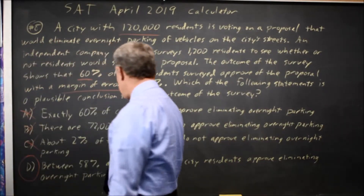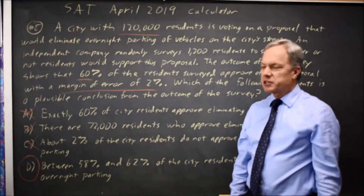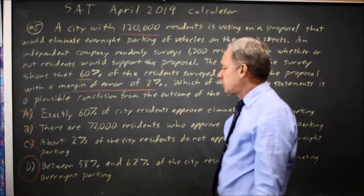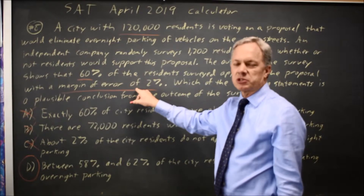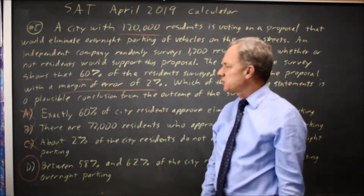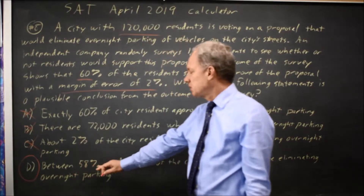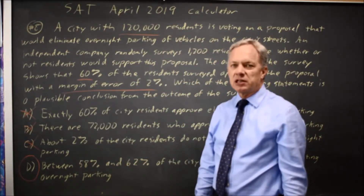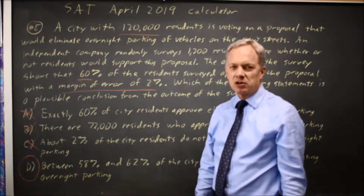Hoping that Choice D will be correct. Since the survey said about 60% approved with a margin of error of 2%, that means it's likely that between 60% minus 2% and 60% plus 2% — so between 58% and 62% — of those surveyed approve of eliminating overnight parking.